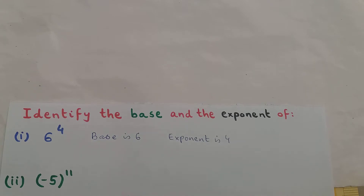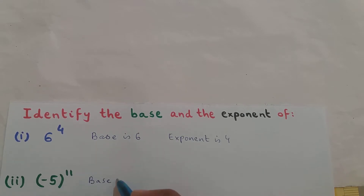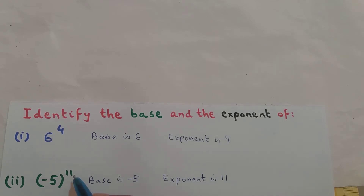Identify the base and the exponent of minus 5 whole raised to the power of 11. So what is the base and what is the exponent for this expression? The base is minus 5 and the exponent is 11. The base of this expression is minus 5 and the exponent of this expression is 11.